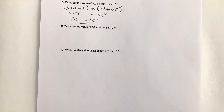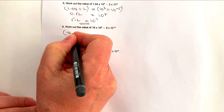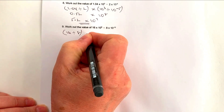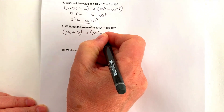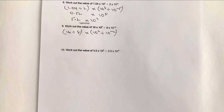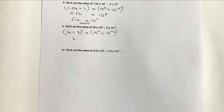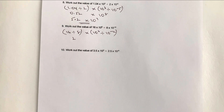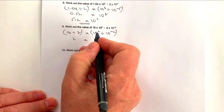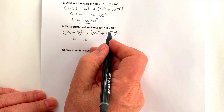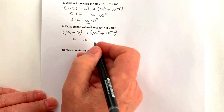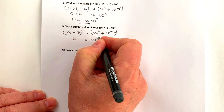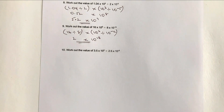Question 9: work out 16 times 10 to the 6 divided by 8 times 10 to the minus 12. The calculation part: 16 divided by 8 is 2 — and 2 is already between 1 and 9, so that's straightforward. The standard form part: 10 to the 6 minus minus 12 — two minuses make a plus — gives 10 to the power of 18. So the answer is 2 times 10 to the power of 18.